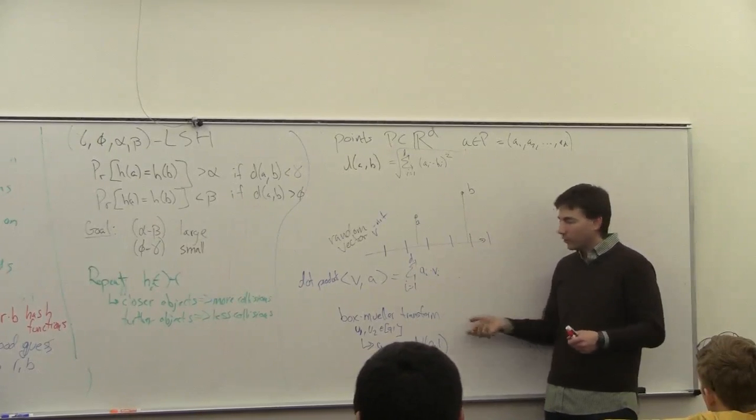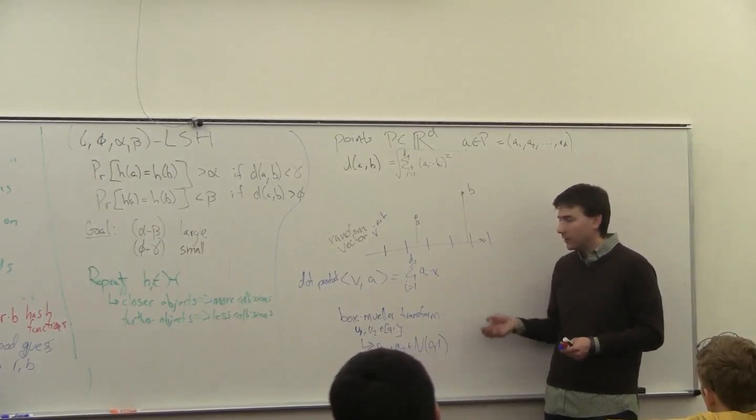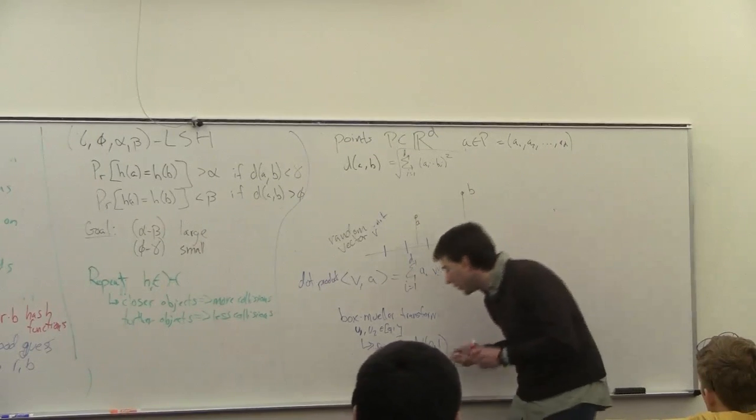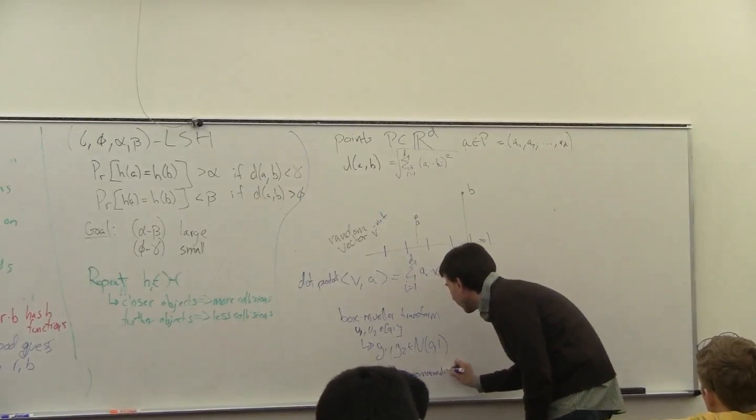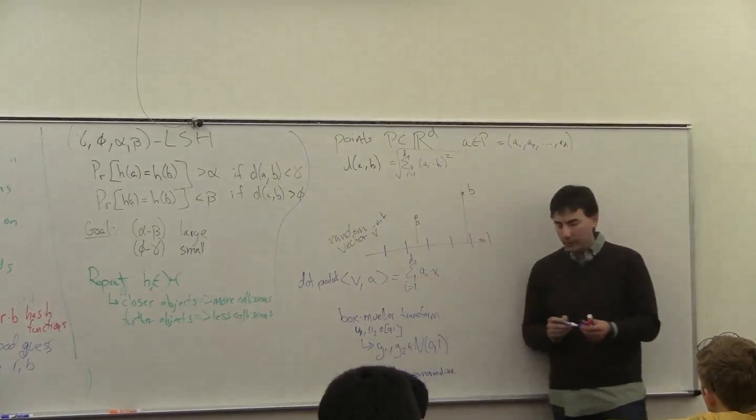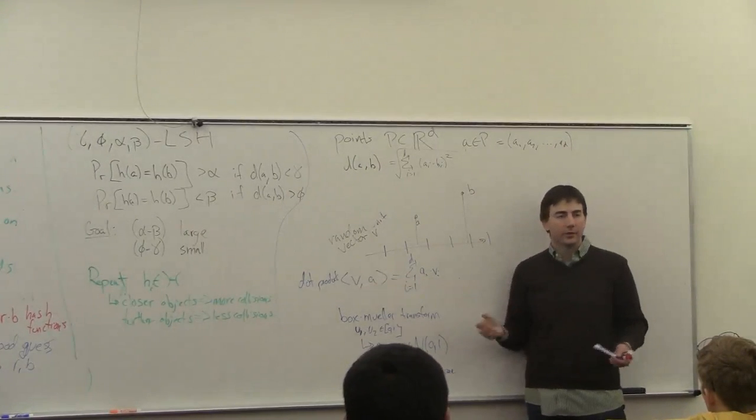So there's this really cool trick to generate, a very simple trick to generate random d-dimensional unit vectors. So we do this, and then normalize. And that's how you get this single vector v, and this is your hash function.